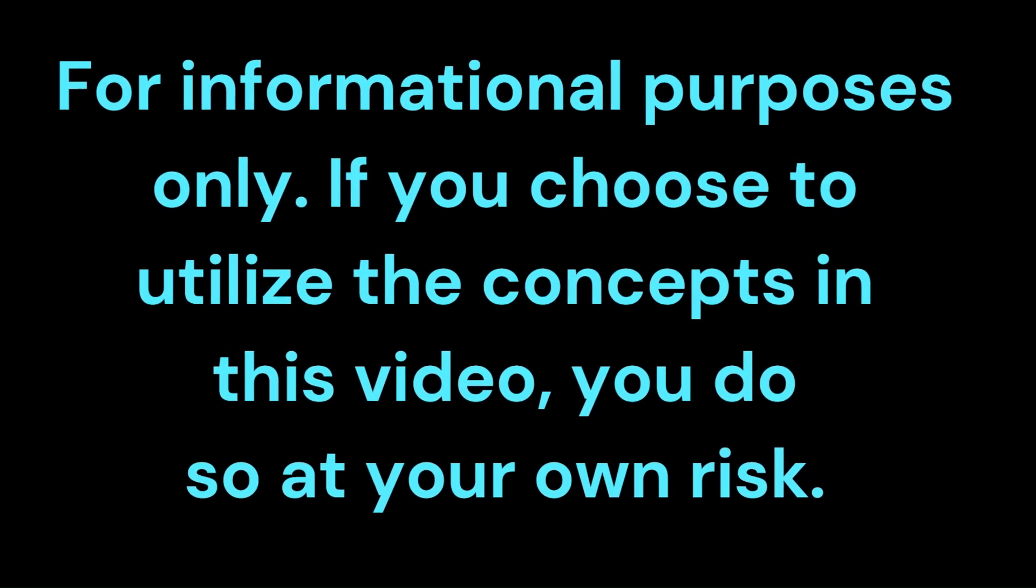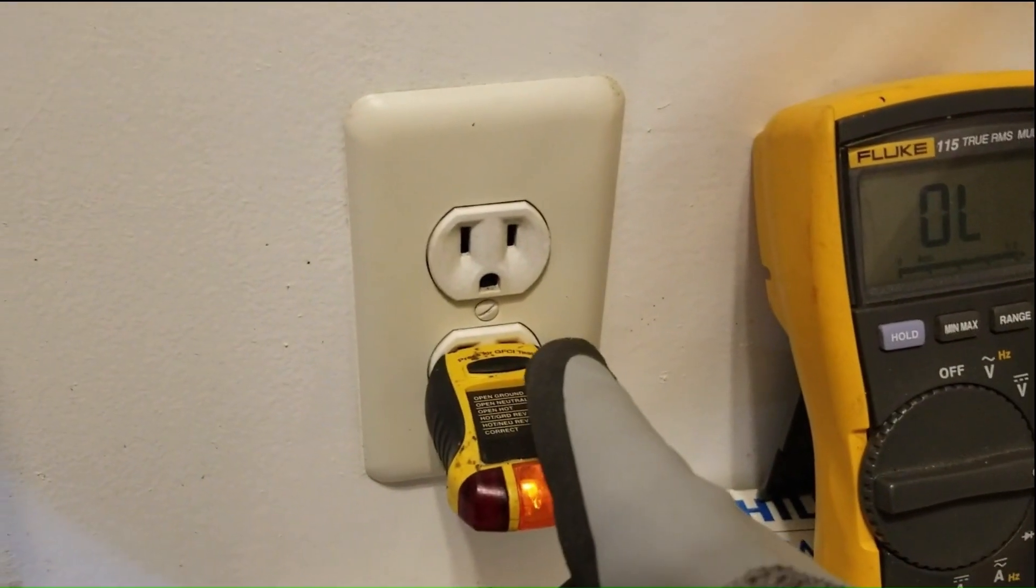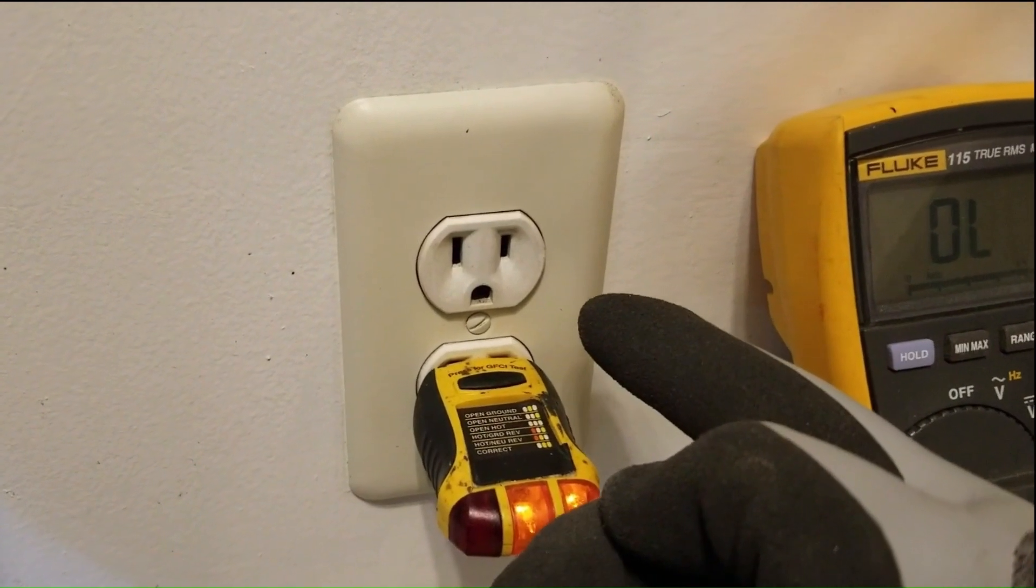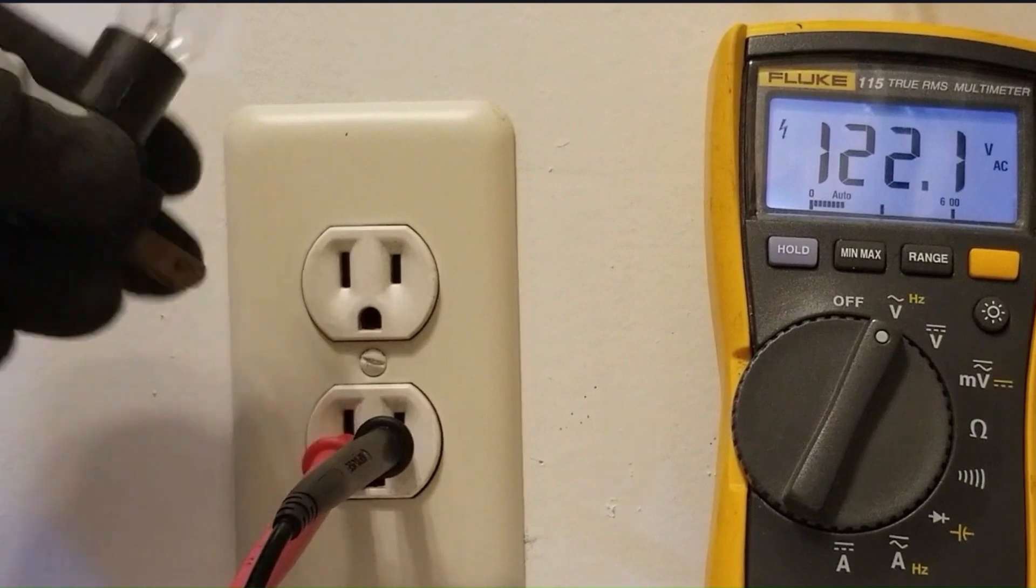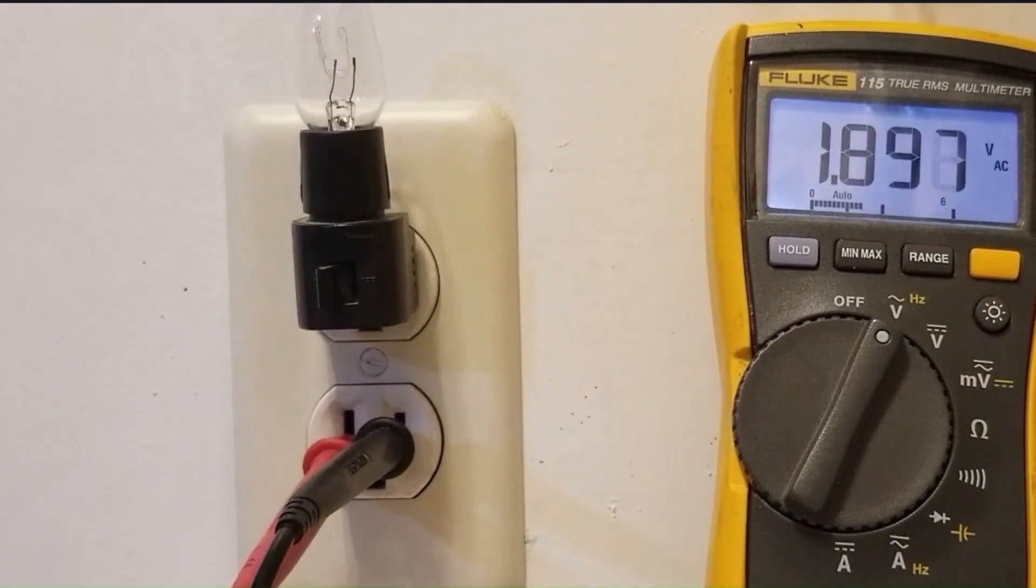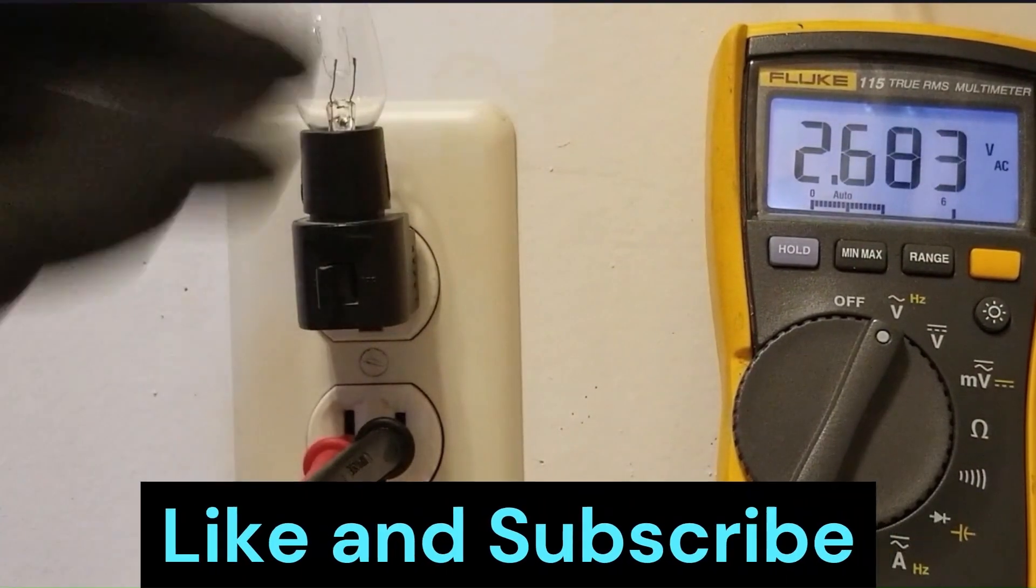These testers can detect open neutrals, open hots, reverse wiring, and even test GFCI outlets. However, they are generally unable to detect compromised outlets—again, outlets that are correctly wired but have a loose upstream connection that causes them to fail under load.